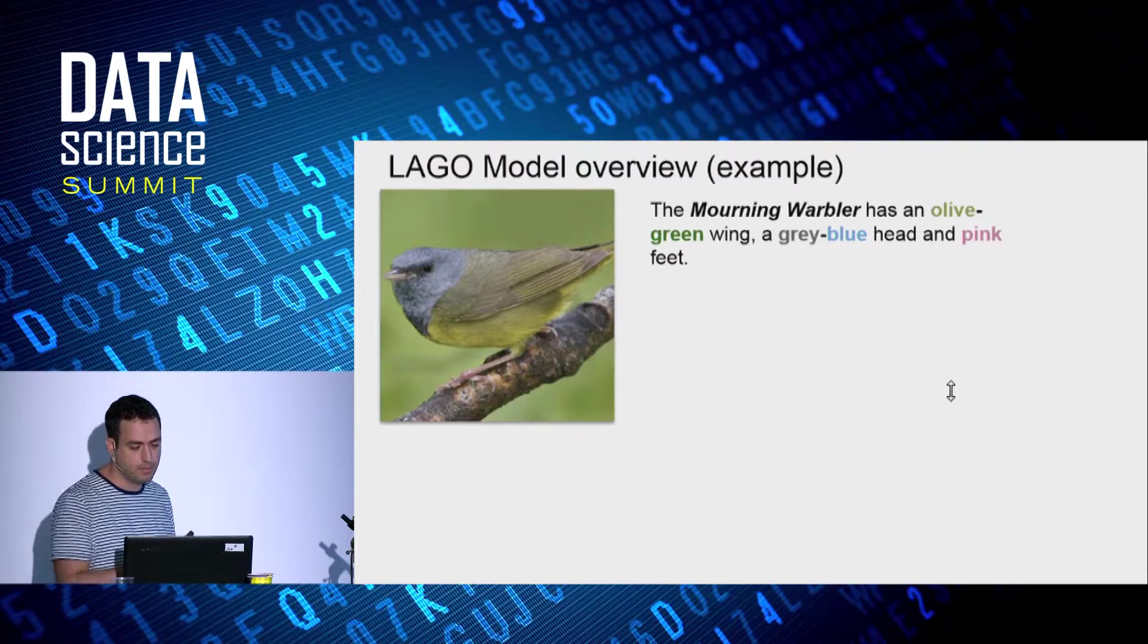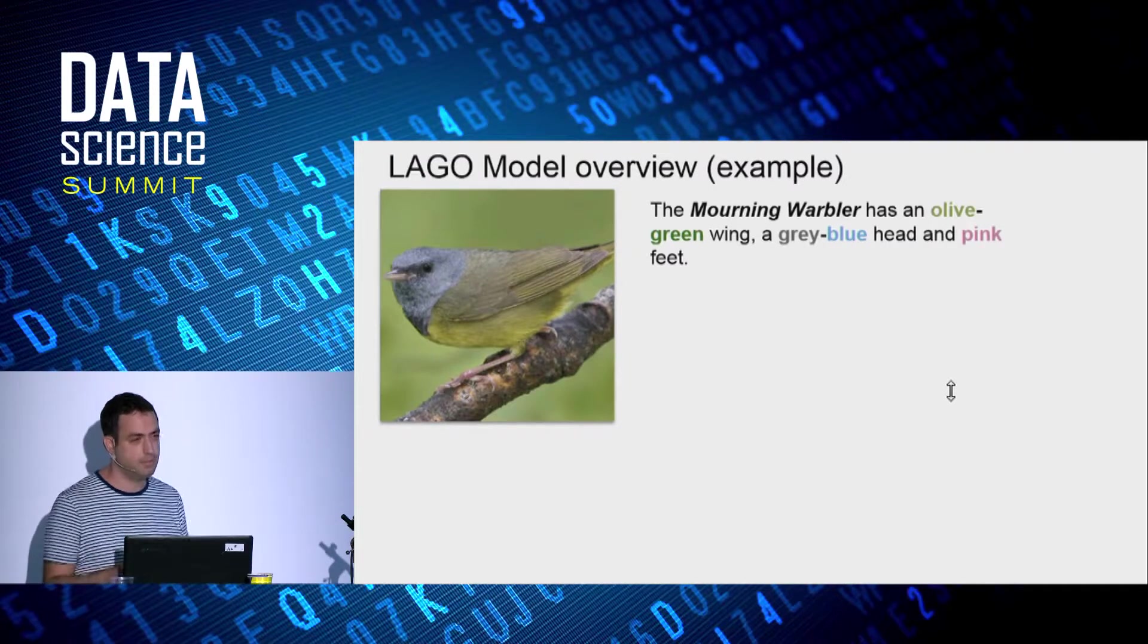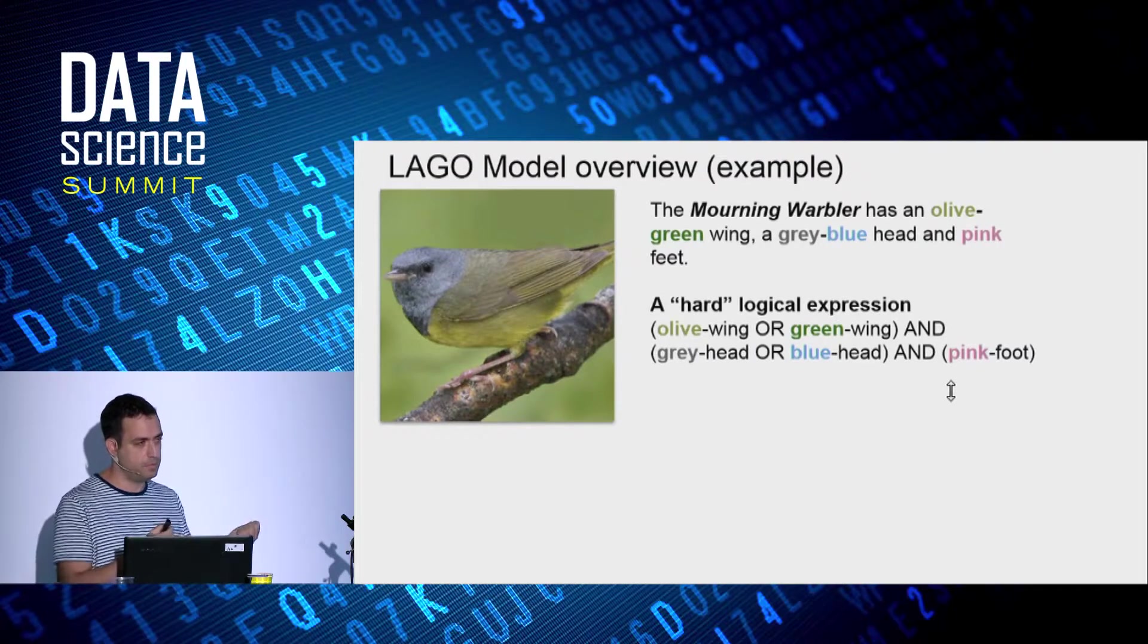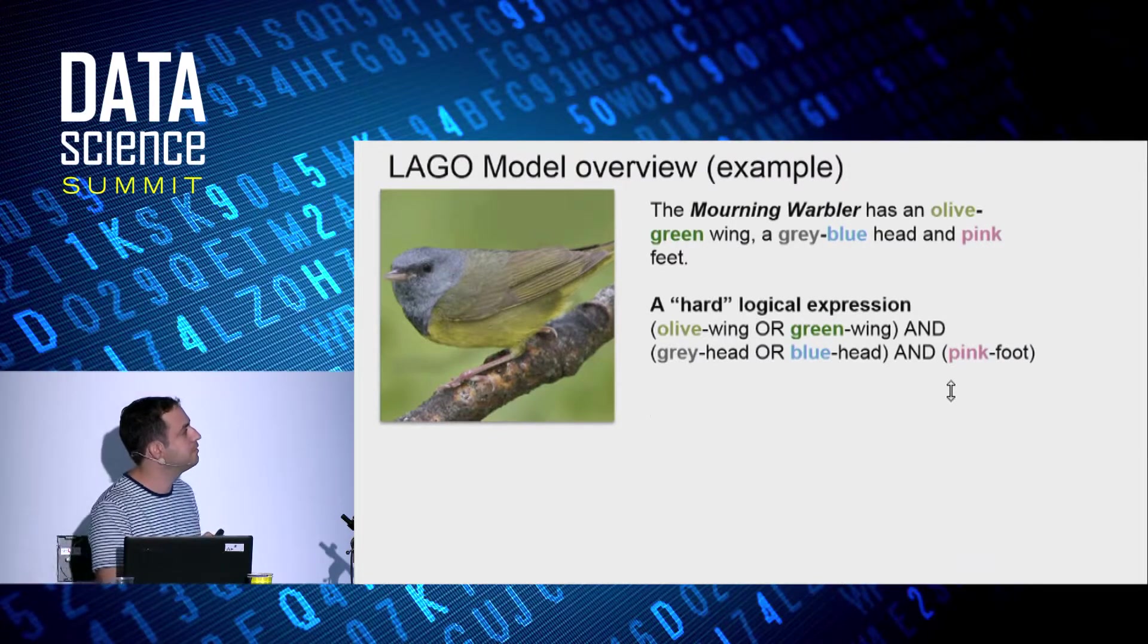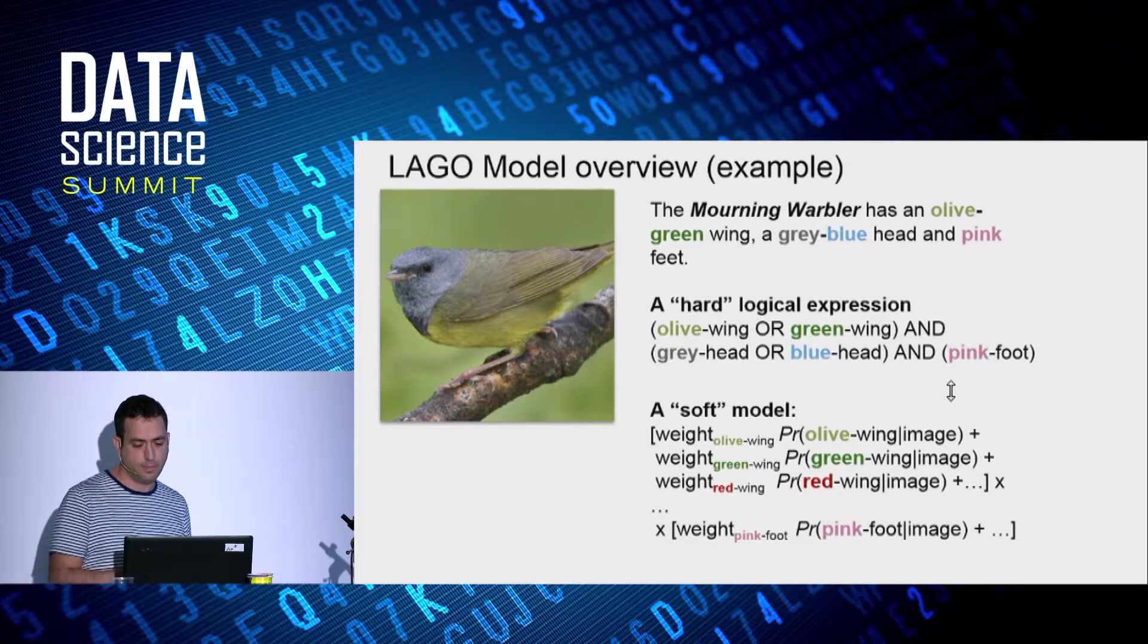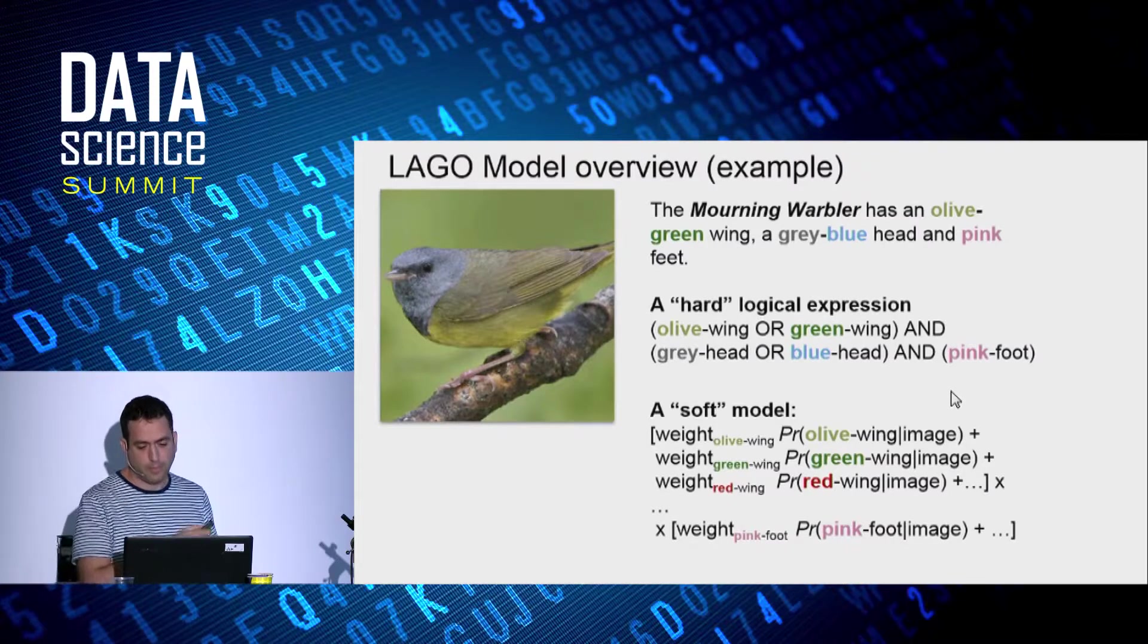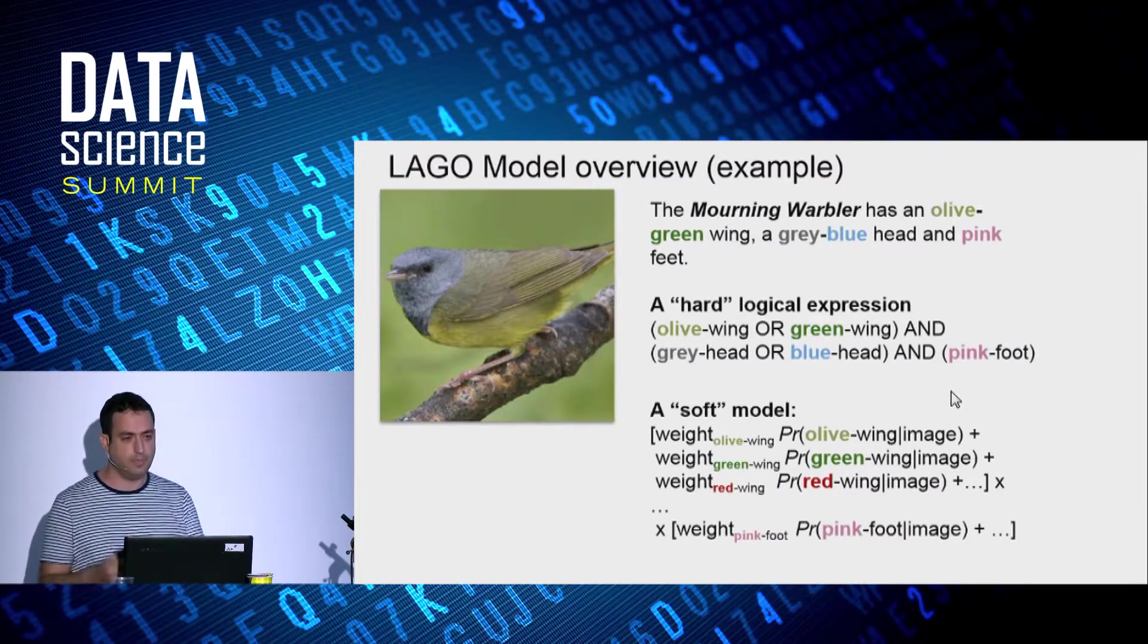To illustrate it better, let's look at a concrete example. So we start with the following description. The mourning warbler has an olive green wing, a gray blue head, and pink feet. This can be represented as the following hard logical expression: olive wing or green wing, to resolve the ambiguity, and gray head or blue head, and pink foot. Finally, our model takes a softer approach, replacing the hard OR by a weighted sum, and the hard AND by a product of probabilities. And you can also note that the soft model accounts for a red wing, although a red wing does not correspond to the class in this example. The soft OR accounts for the red wing by assigning a zero weight for that irrelevant attribute.